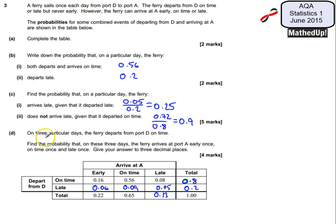Part D says on three particular days the ferry departs from port D on time. So we know that this is going to be out of 0.8. We're given that information. So we want to find the probability that on these three days the ferry arrives at port A early once, on time once and late once. And then we're going to give our answer to three decimal places.